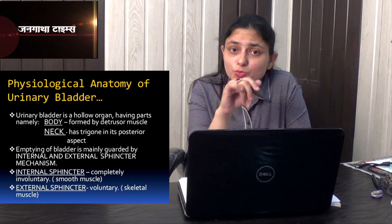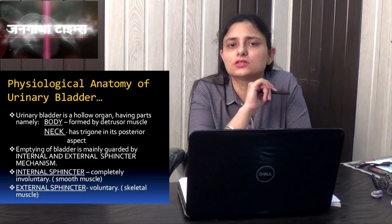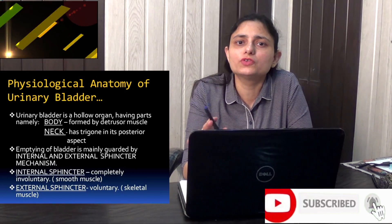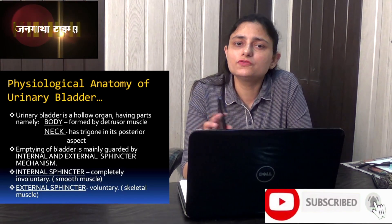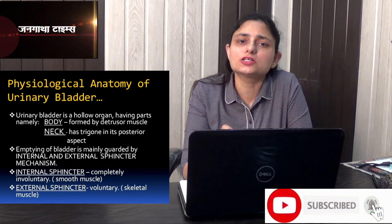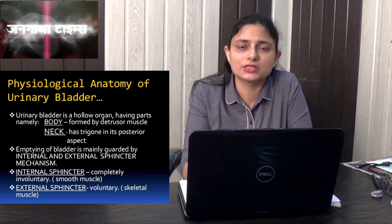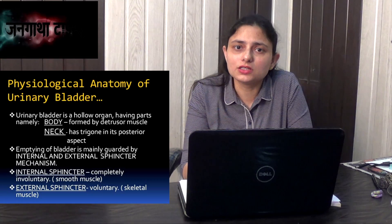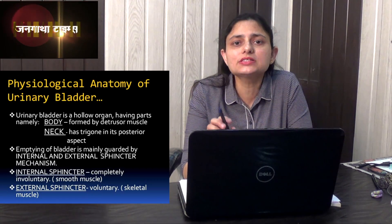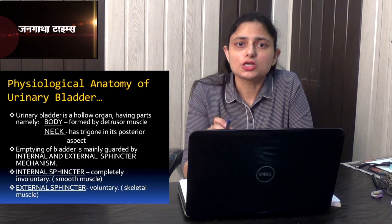Now, in the urethra, there are two sphincters: the internal urethral sphincter and the external urethral sphincter. These two sphincters guard the opening of the urethra and the flow of urine. The internal urethral sphincter is made up of smooth muscle and is involuntary in action, whereas the external urethral sphincter is made up of striated or skeletal muscle and is voluntary in action.